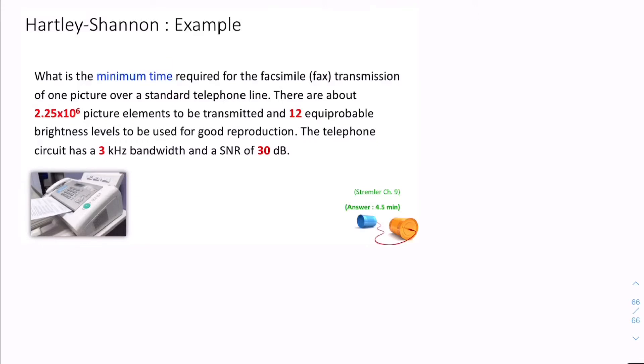We're told that the bandwidth is 3 kHz. We're given the maximum signal-to-noise ratio, 30 decibels. We're told that the picture has this many picture elements, or pixels, or dots. And we're told how many grey levels there are, so how many shades of grey, or how many levels our quantiser will have.